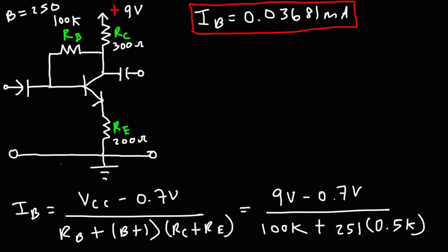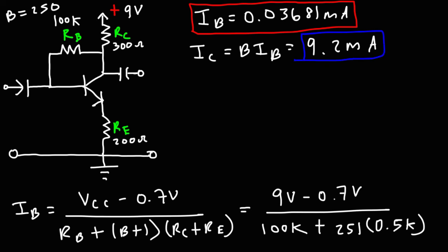The collector current is beta times IB: 250 times 0.03681 milliamps gives approximately 9.2 milliamps. The emitter current is IC plus IB: 9.2025 plus 0.03681, which rounds to 9.24 milliamps.